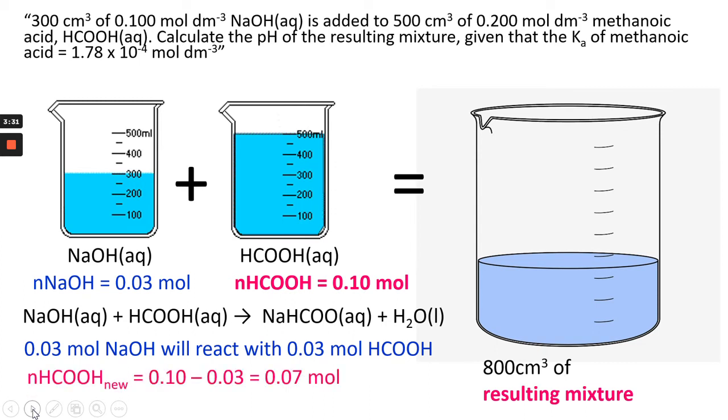So what you need to do now is think about the HCOOH, which is obviously in excess, there's more of it to start with. So you subtract from the original 0.1 moles how much methanoic acid has actually been used up. And that gives you a new amount of 0.07.